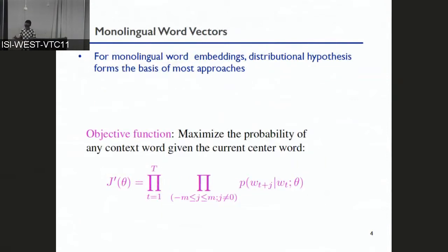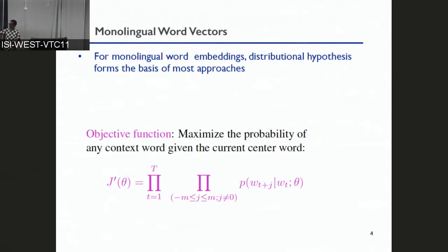Monolingual word vectors are typically learned by making use of the distributional hypothesis, which is that we can learn the meaning of a word from the words that it co-occurs with. One common method is to maximize the probability of any context word given a center word. We go through a large corpus, treat each word as a center word, and take its context — the M words to the left and M words to the right — and optimize for that. The parameterization can be a linear model like skip-gram, or it can be a neural network.